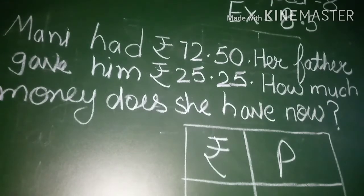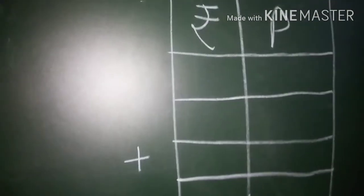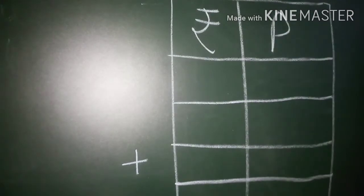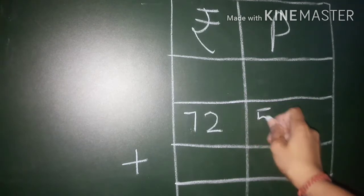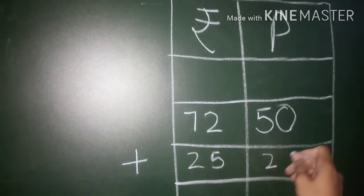Mani earlier had 72 rupees and 50 paise. After this her father gave her 25 rupees and 25 paise. Means now she would have more money. So, what we have to do? We will add. Just write them in column of rupees and paise.